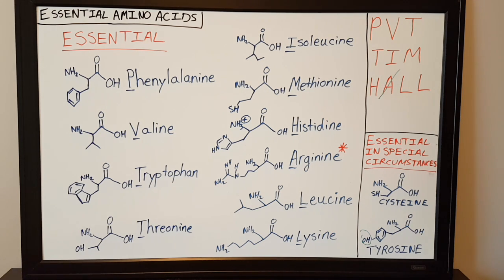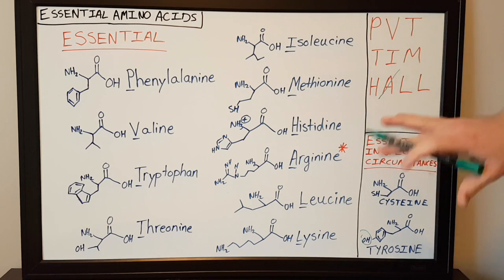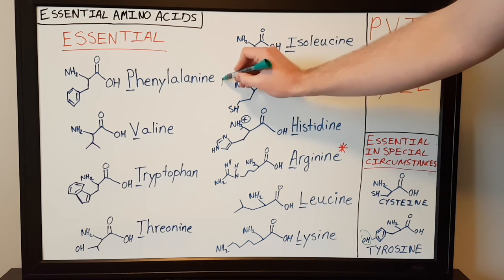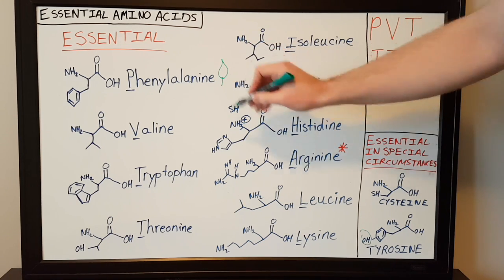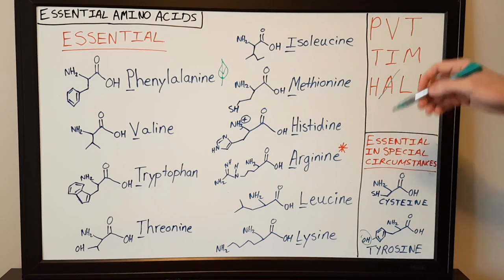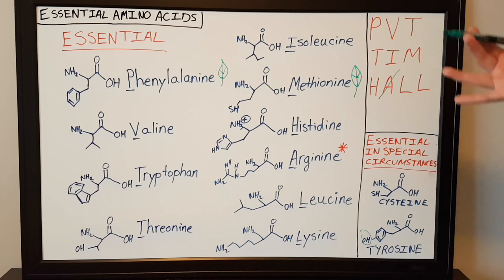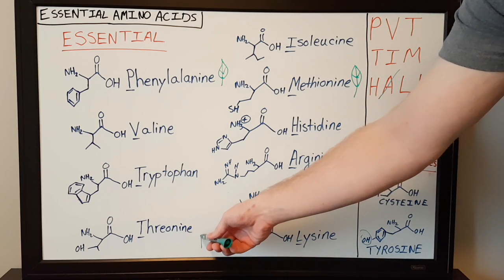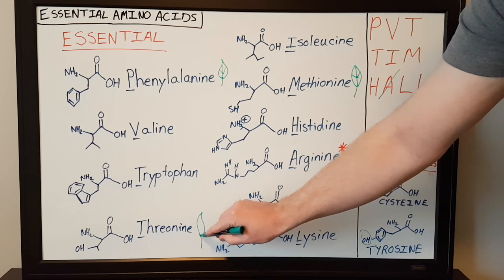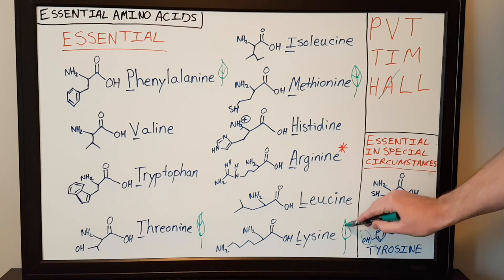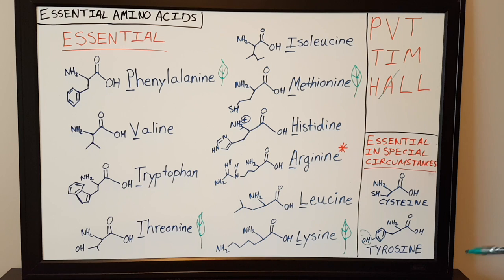For vegetarians and vegans, it's interesting to note that four amino acids are described as limited or deficient in plant material: phenylalanine, methionine, threonine, and lysine. Those four amino acids are typically deficient in plant-based diets.